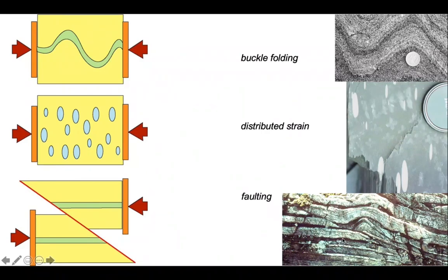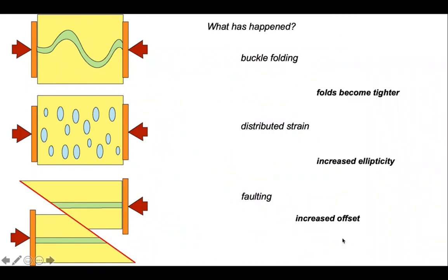So we can ask, how did we make the final structures? What's happened? During the progressive deformation for the folds, the folds became tighter. In the middle diagram, the region in the vice became distorted through distributed strain, and the ellipticity of our markers increased. In the lower diagram, the fault increased in offset the more squashed the model became.